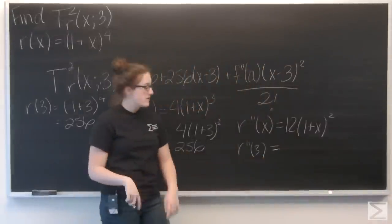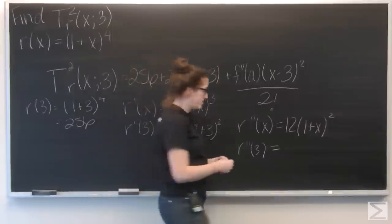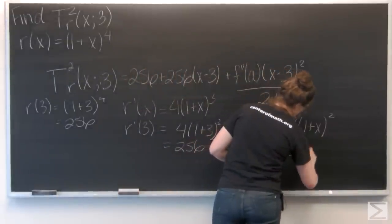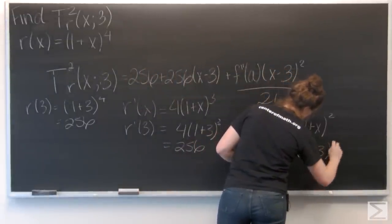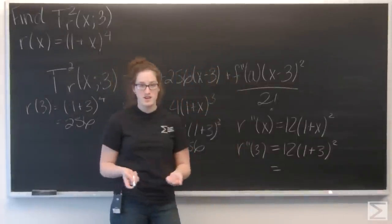Now let's plug in 3. So I'm going to have 12(1+3)², which is 12 times 16, which is 192.